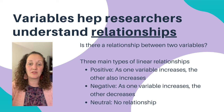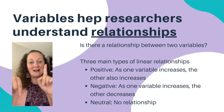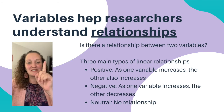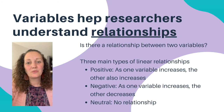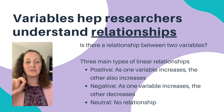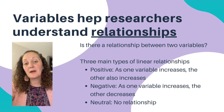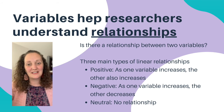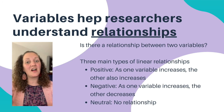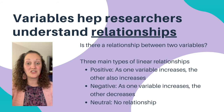A negative relationship is that as one variable increases, the other variable decreases — they move in opposite directions. The interesting thing is when we talk about variables that help researchers understand differences, we're talking about causation: a change in one variable causes a change in another. When we talk about how variables help researchers understand relationships, we're talking about correlation: as one variable changes, the other also changes, but we don't know which one causes a change in the other.